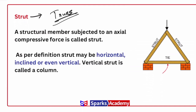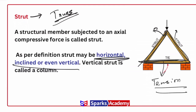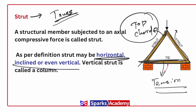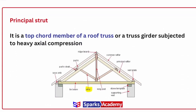Moreover, in the strut, it may be horizontal, vertical, and inclined. In the strut form, we present it. So in this simple truss, we have two members — one is the compression member. I can call that as a strut. And the tension member is the bottom chord member. So you got the point. And that is the principal strut — I saw the truss, that was the principal strut.